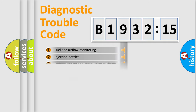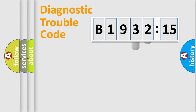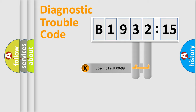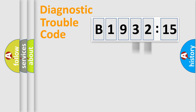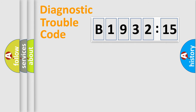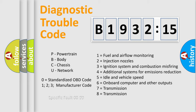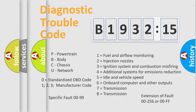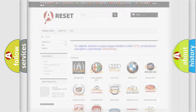The third character specifies a subset of errors. The distribution shown is valid only for the standardized DTC code. Only the last two characters define the specific fault of the group. The add-on to the error code serves to specify the status in more detail — for example, a short to ground. Such a division is valid only if the second character code is expressed by the number zero.